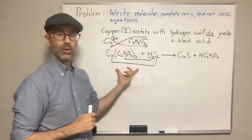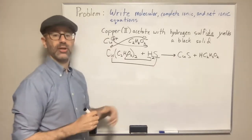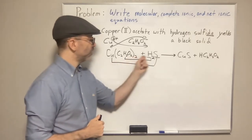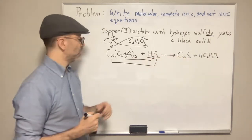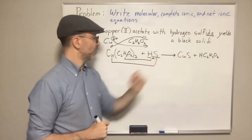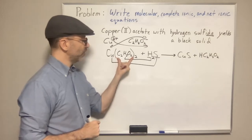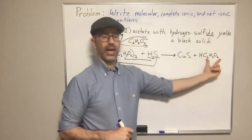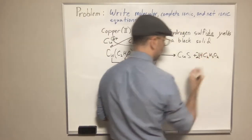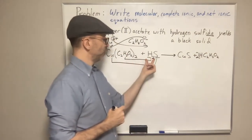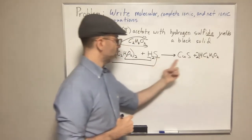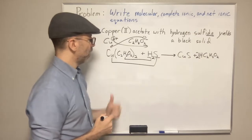Now we need to balance the equation and identify the states of matter. We have 1 copper on each side — balanced. We have 2 acetates on the reactant side but only 1 acetate unit on the product side, so we put a 2 in front of the acetic acid. We have 2 hydrogen and 1 sulfur on each side — balanced. So now we have our balanced equation.